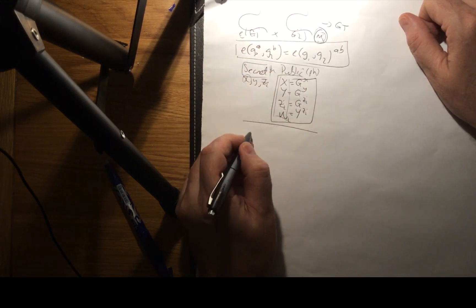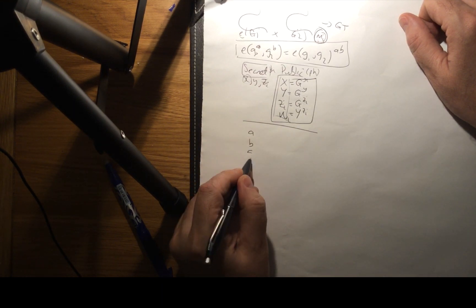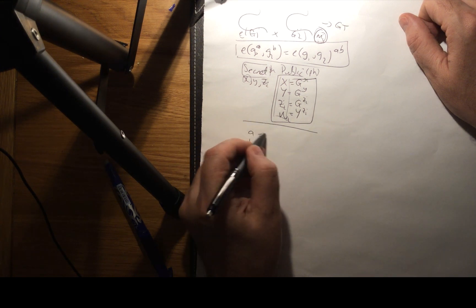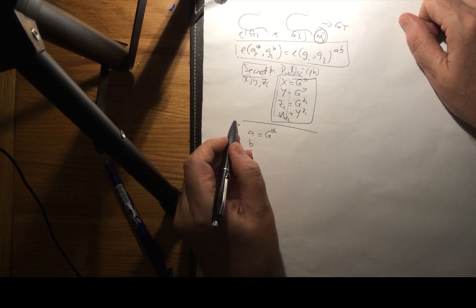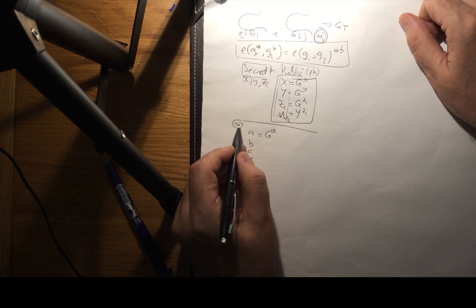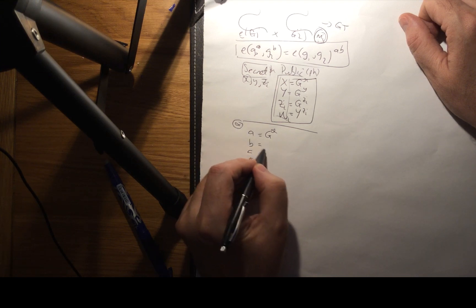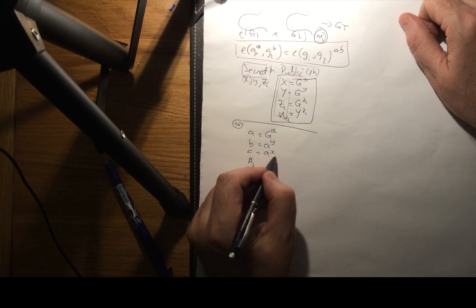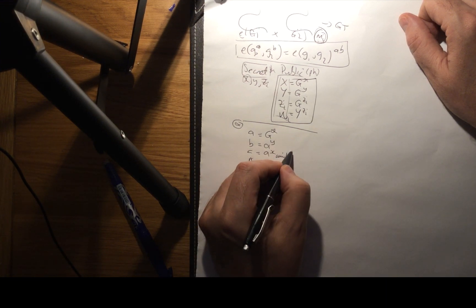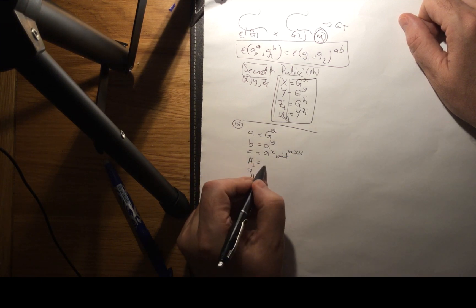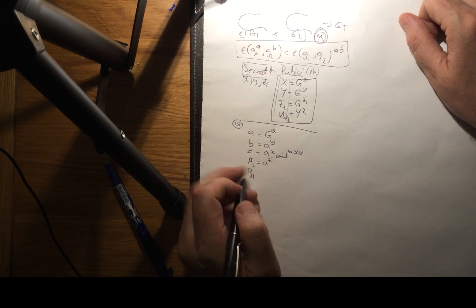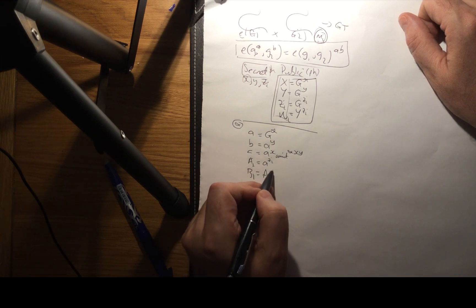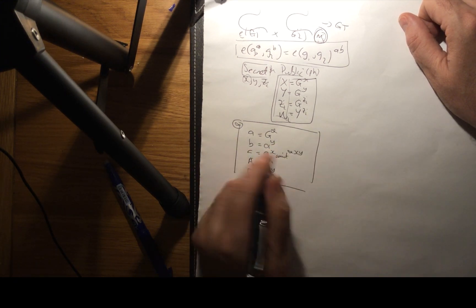When we want to sign our messages we take a, b, c, an ai list, and bi values. a becomes g to the power of alpha, ensuring every signature is different even for the same messages, so alpha is a new random value each time. b equals a to the power of y, c equals a to the power of x times a commitment to the power of alpha times x times y. ai equals a to the power of zi, where each ai depends on zi, and bi equals ai to the power of y. These become our signing values incorporating our commitment.